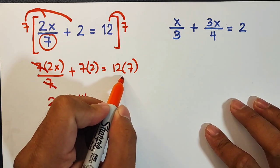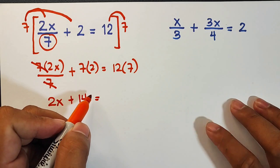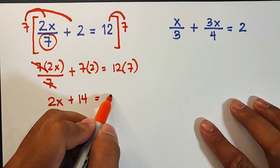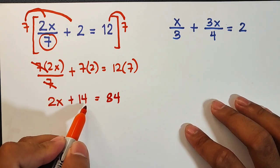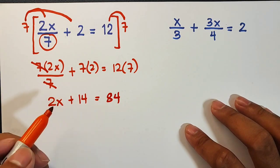And for 12 times 7, that equals 84. What's next is we will eliminate 14, so what we need to do is subtract.